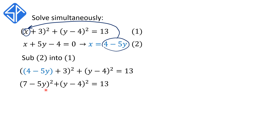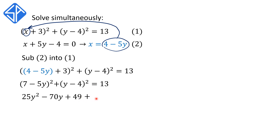Then we're going to expand each of these brackets using binomial expansion. The expansion of 7 minus 5y all squared is 25y squared minus 70y plus 49. Then we add on the expansion of y minus 4 squared, which is y squared minus 8y plus 16, and all of this is still equal to 13.